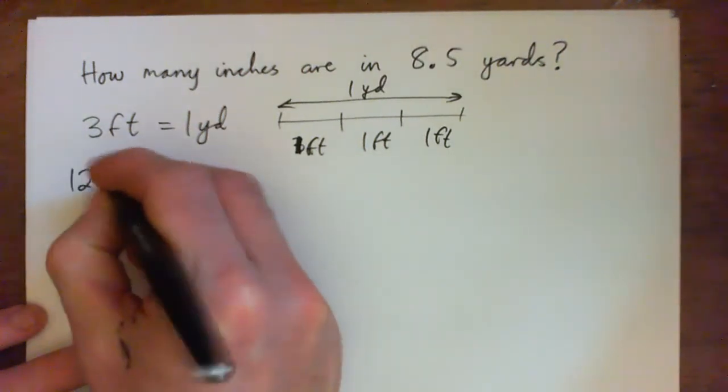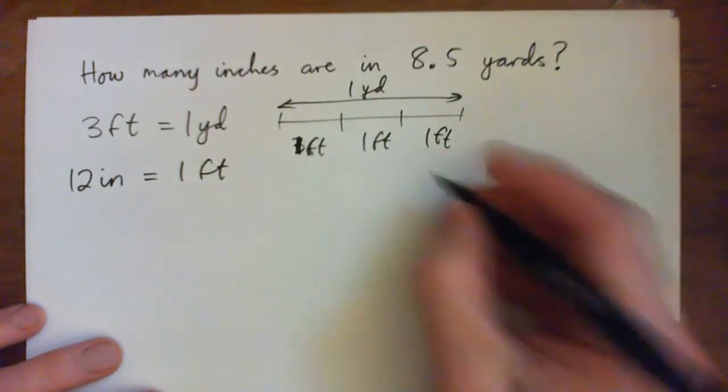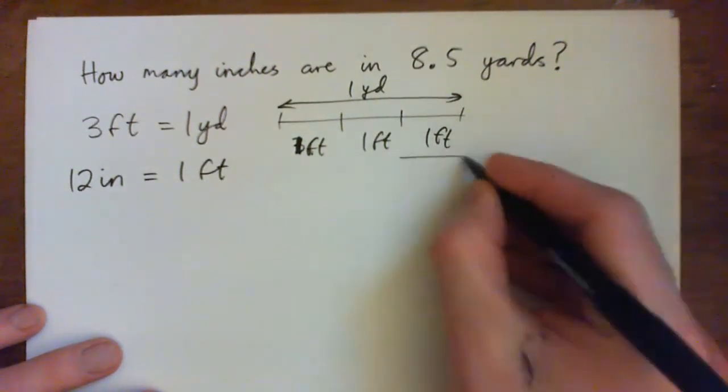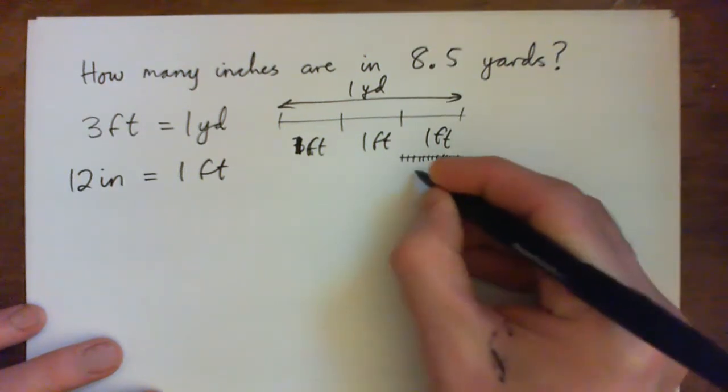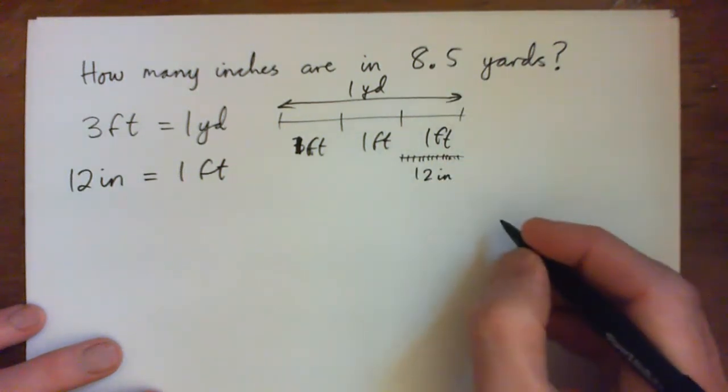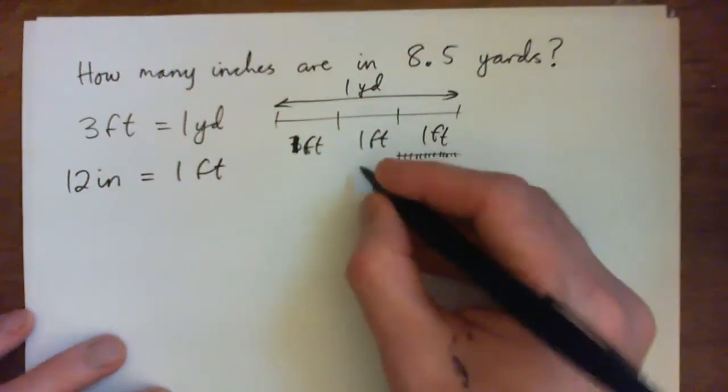And there's also 12 inches in one foot. So each foot is made up of one, two, three, four, five, six, seven, eight, nine, ten, eleven, twelve inches. So that actually means that there's 12 inches in one yard.